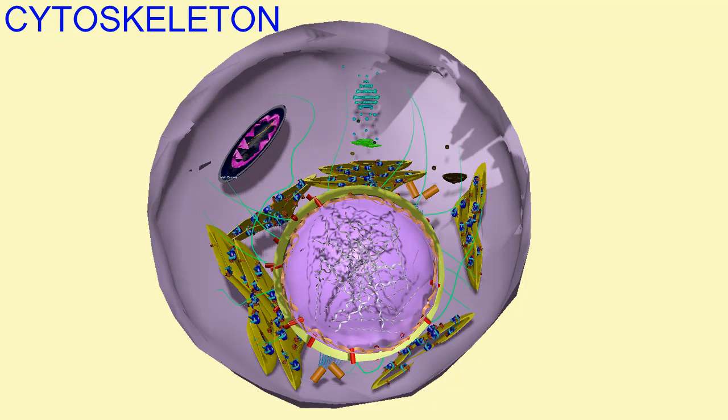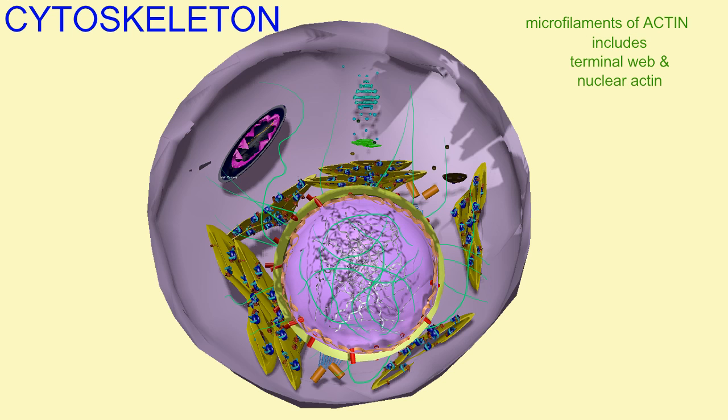The cytoskeleton is composed of a number of different types of protein fibers. Actin filaments are the narrowest, forming the microfilaments throughout the cell and throughout the nucleus, but are most highly concentrated